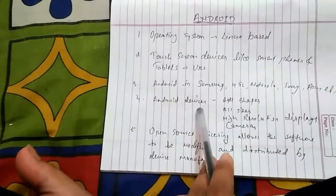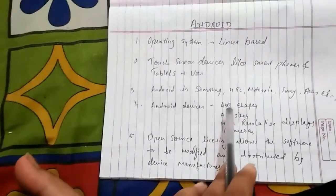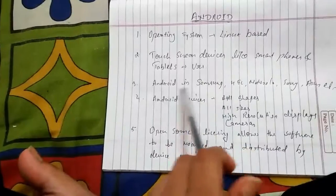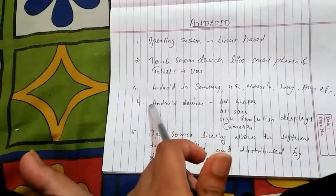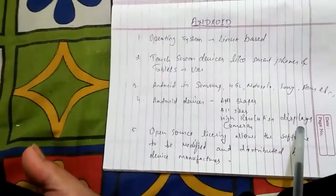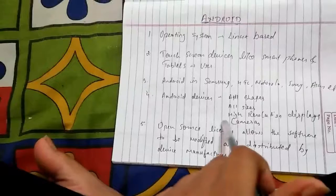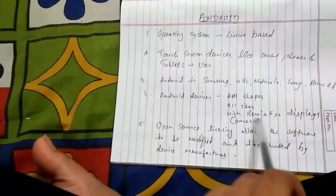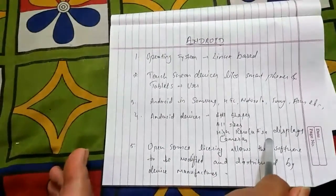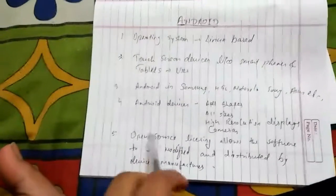The fourth point states that Android devices come in all shapes and sizes — from smaller smartphones to larger tablets — with high-resolution HD displays. There are also a number of cameras that take very clear photos, with cameras now coming at 16 megapixels and higher.